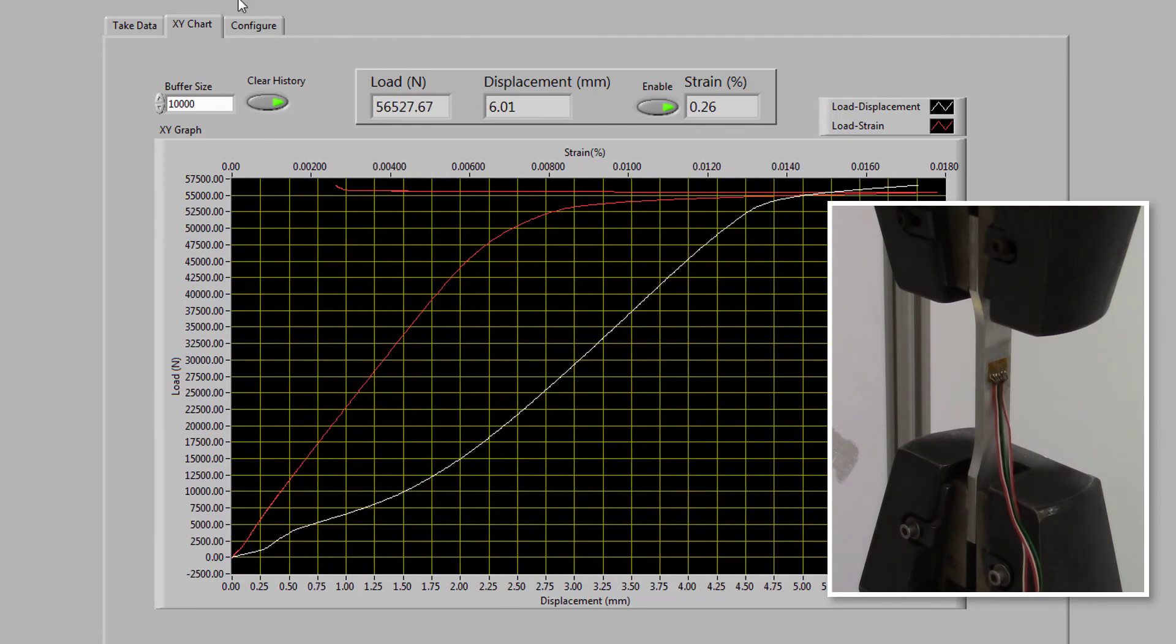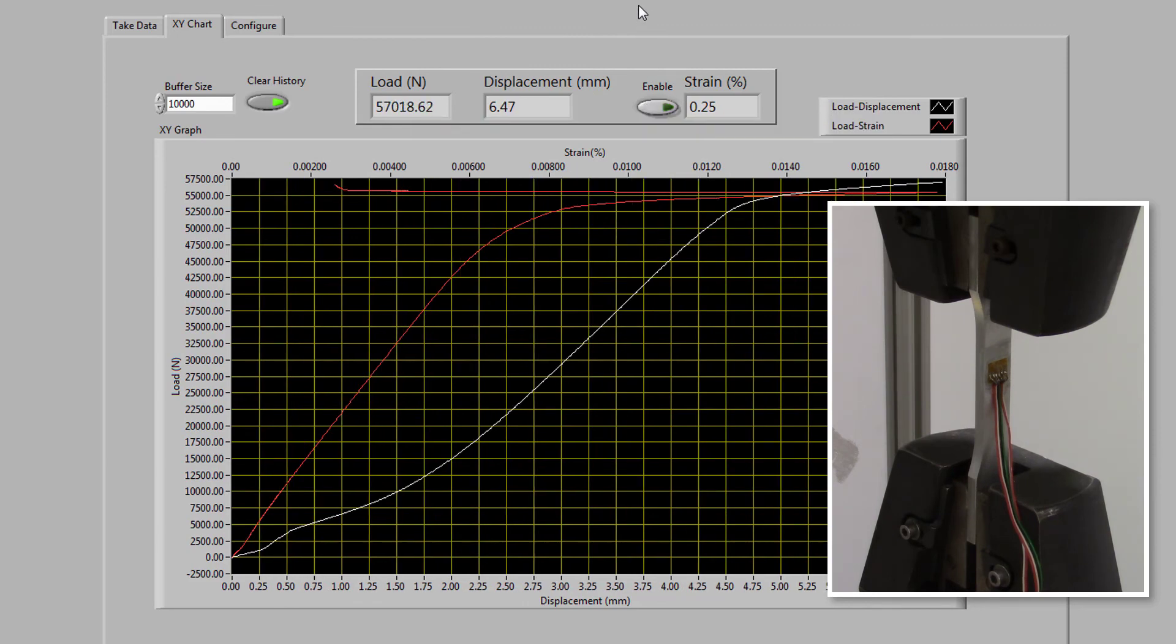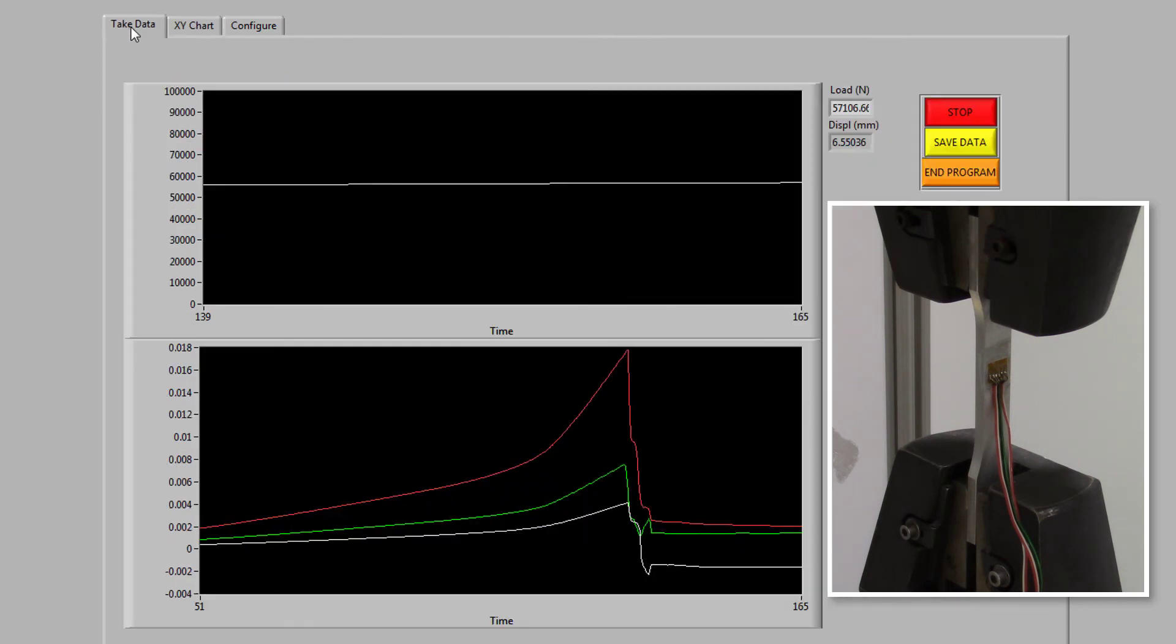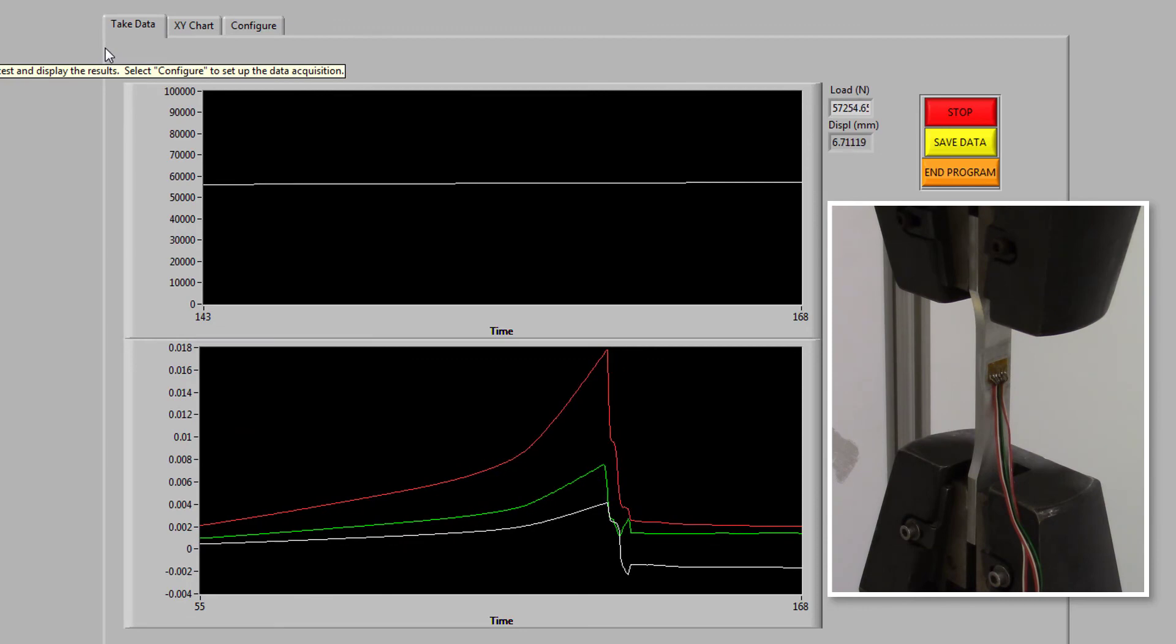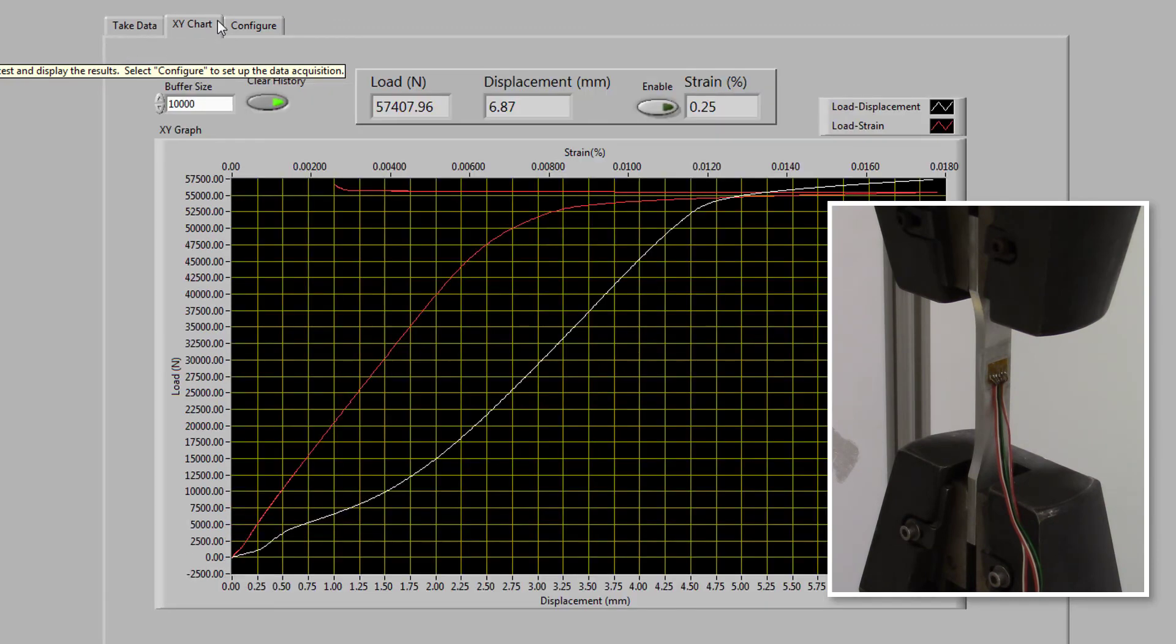Eventually, the strain channel will drop as the strain gauges begin to fail. Toggle the Enable switch to discontinue plotting strain. Switch to the front panel to view the three strain channels and the sequence of failure. Now let's return to the XY chart.